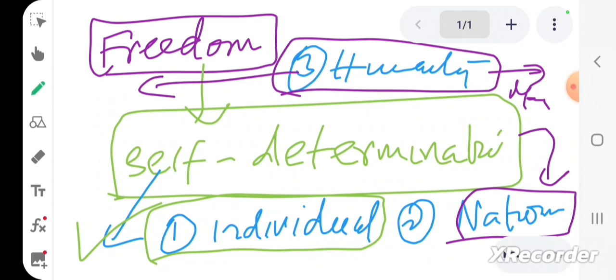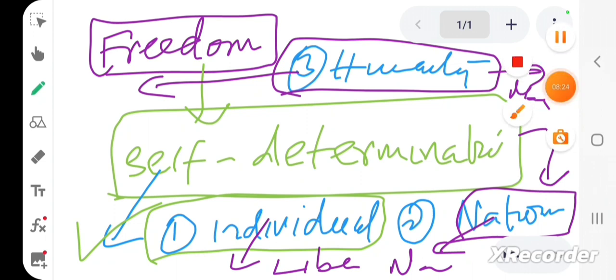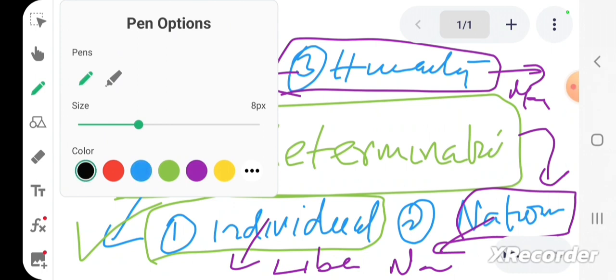So Marxism, in that sense, we say Marxism is also a form of capitalism. Fascism is also a form of capitalism, and liberalism is also a form of capitalism. So we recognize capitalism at all these three levels, although we also recognize that liberal capitalism is the most successful and most powerful form of capitalism.